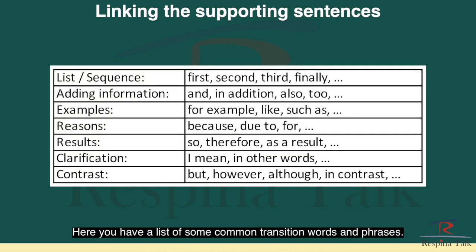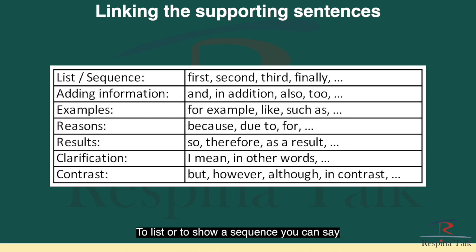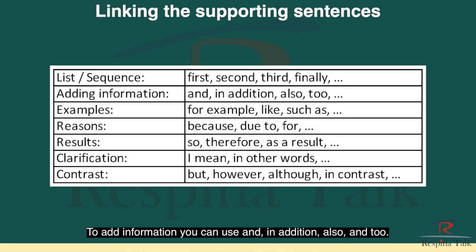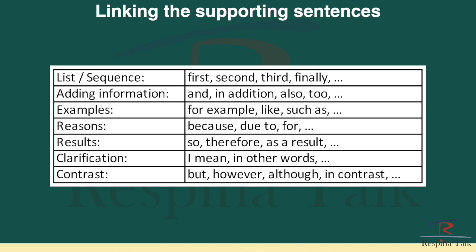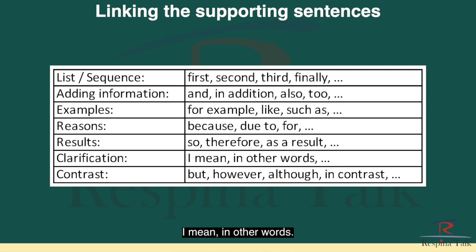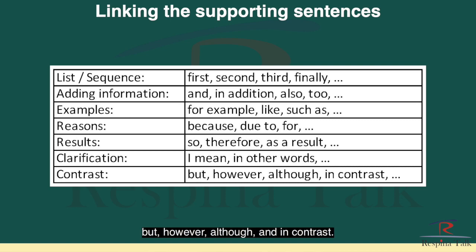Here is a list of some common transition words and phrases. To list or show a sequence, you can say: first, second, third, and finally. To add information: and, in addition, also, and too. For showing examples: for example, like, or such as. For showing reasons: because, due to, and for. To show results: so, therefore, as a result. For clarification: I mean, in other words. And for contrast or differences: but, however, although, and in contrast.